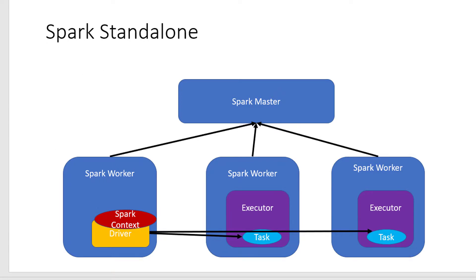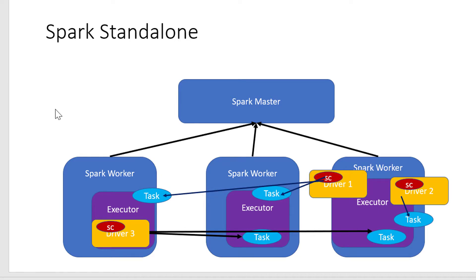Simultaneously, if there are n number of jobs getting submitted within the cluster, that many drivers will get started. In this particular diagram, we have three applications simultaneously running, so three drivers got started. Each driver will have their own Spark Context to coordinate — driver one started two tasks, driver two started one task, and driver three started two tasks within various worker machines. Once the job is done, the driver gets terminated and the result can be collected by various means.